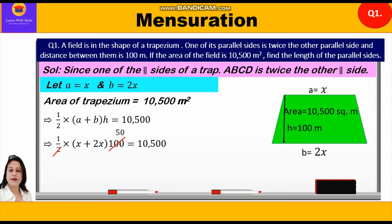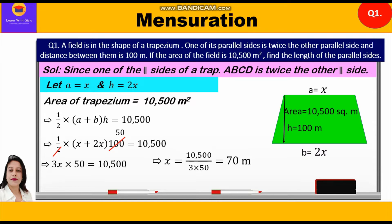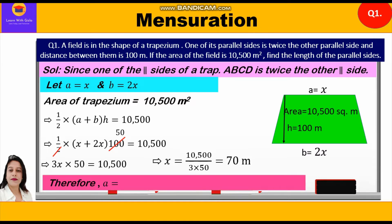100 divided by 2 gives 50, and X + 2X is 3X, so 3X into 50 = 10,500. Cross multiplying, X = 10,500 divided by (3 × 50) = 70 meters. Therefore A = X = 70 meters and B = 2X = 2 × 70 = 140 meters. So this is how we found the length of the two parallel sides, A and B.